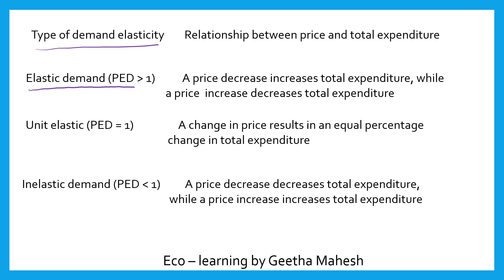When elasticity of demand is greater than one, that is more elastic demand. The second is unitary elasticity of demand, or unit elastic demand, where elasticity of demand is equal to one. The third is inelastic demand, or less elastic demand, where price elasticity of demand is less than one.